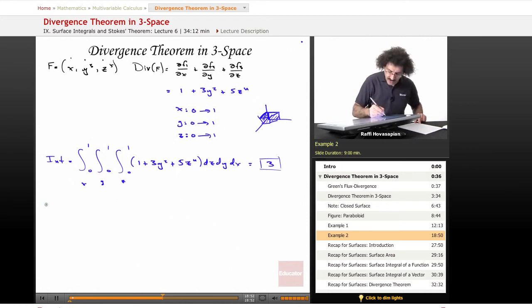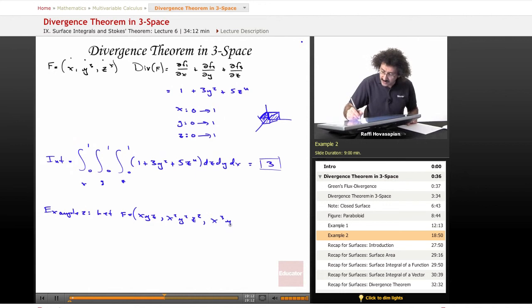Let's try another example, example two. This time we will let F, our vector field, be equal to, make it a little bit more complicated: xyz, x squared y squared z squared, and x cubed y cubed and z cubed.